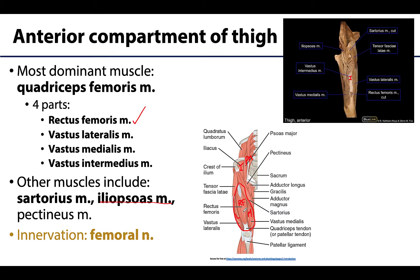There is also the sartorius muscle — one of my favorites. It is the most superficial muscle of the anterior compartment and has the distinction of being the longest muscle in the body, extending from the hip all the way down toward the knee. We will be identifying the sartorius and iliopsoas in addition to the quadriceps femoris. We are not going to focus on the pectineus muscle, which is located in the superior medial thigh in a deeper region.